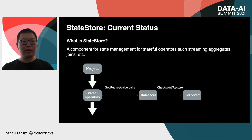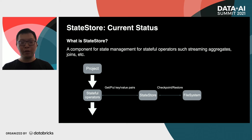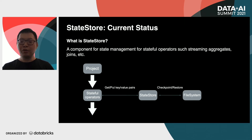Let's talk about the state store. What is a state store? A state store is a component used for state management in structured streaming for stateful operators like streaming aggregation and join. For these stateful operators, they can get and put key-value pairs on the state store. In each micro-batch, the state store will checkpoint states to a distributed file system. In case of a job failure, Spark can reload the checkpoint state back to the state store.